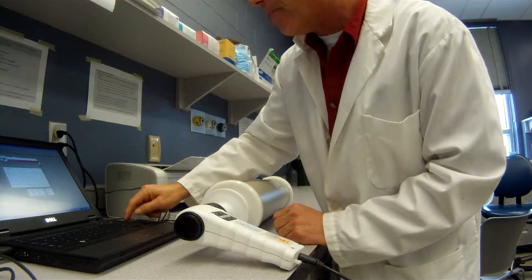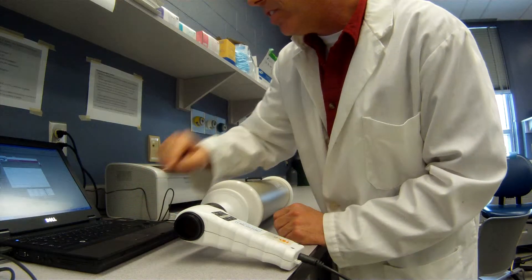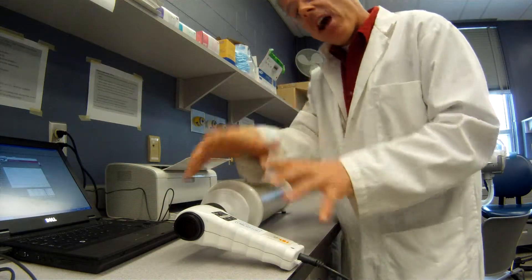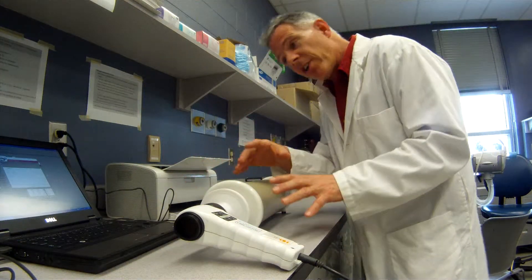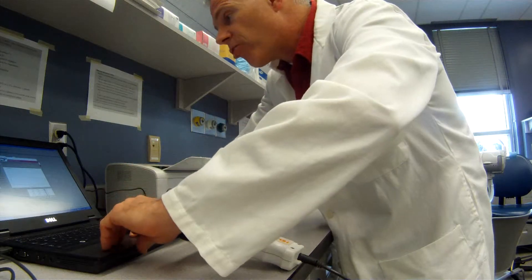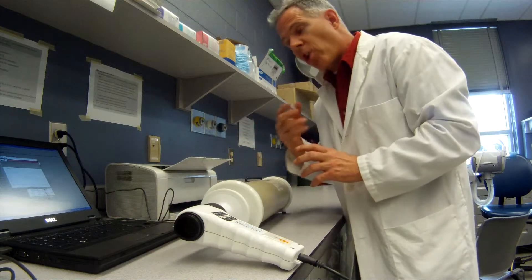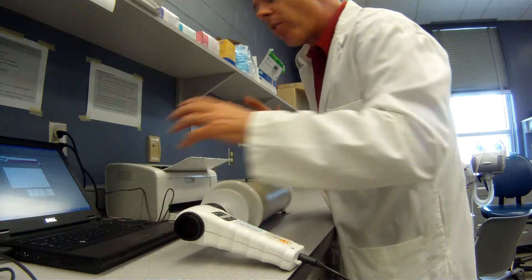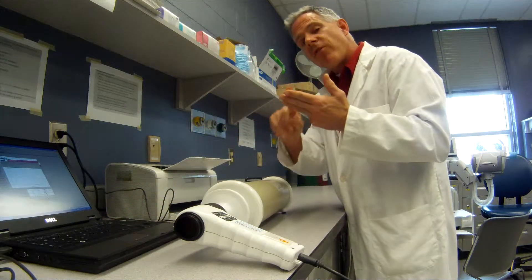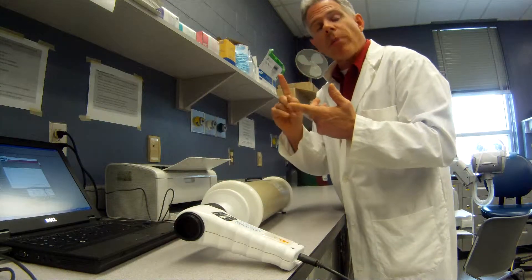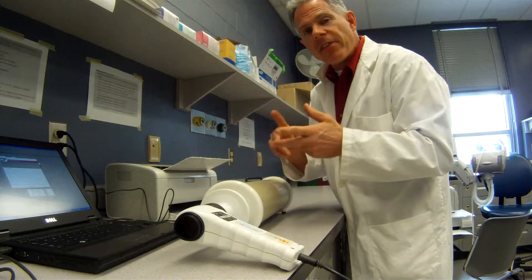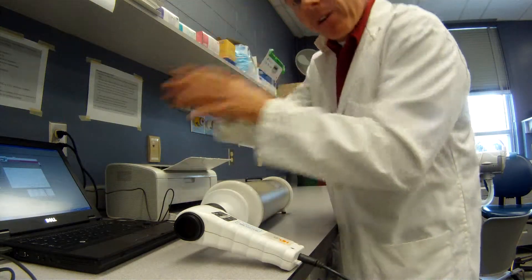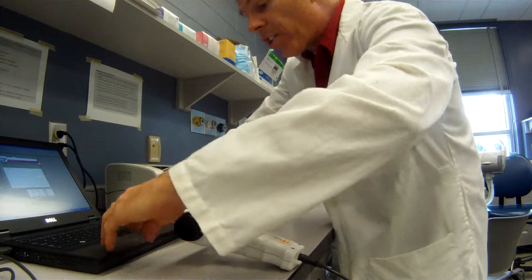Now we have to do a verification. We've calibrated the device and now we're going to do a verification to make sure it's working correctly. Now this is where you need to know a little bit about the American Thoracic Society guidelines, because it wants to make sure that we verify it for three flow rates: a low which is about 1 liter per second, a medium flow rate about 5 liters per second, and a high flow rate about 10 liters per second. It doesn't tell you this in the software, you just have to know that.